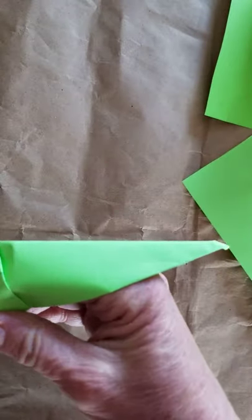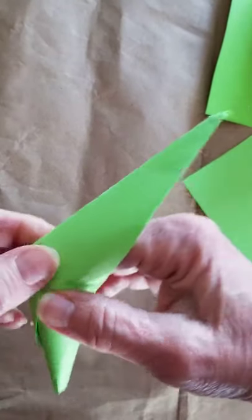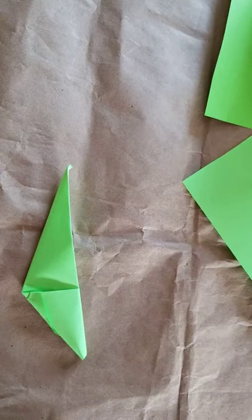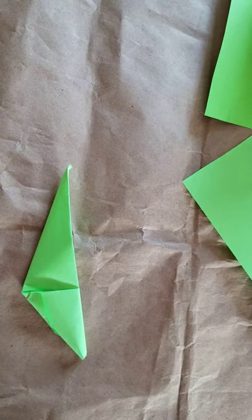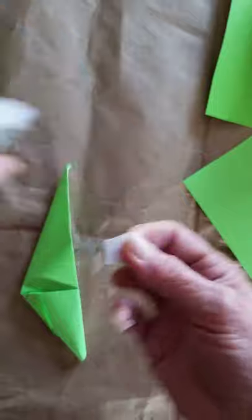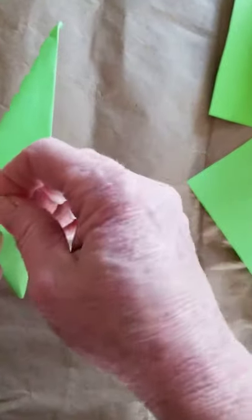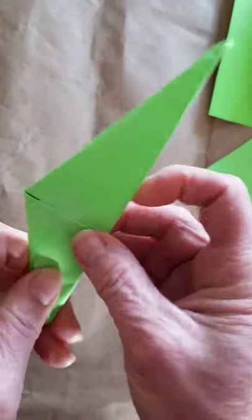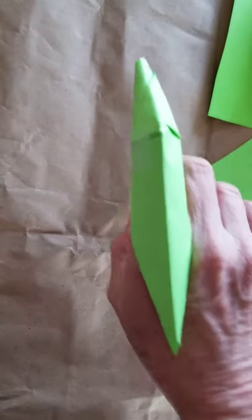The other thing I find though, is that they tend to not stay very well at this corner. So sometimes I will just take a little bit of tape and I'll tape that tiny corner there so that it'll stay. And then I've got a dinosaur claw.